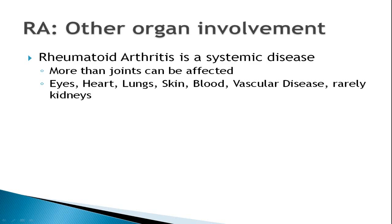An important thing to know about rheumatoid arthritis is that it is not just a disease of joints. It can affect more than just joints, and it really depends on the severity of the disease and how well or how poorly it is treated or controlled, which allows other manifestations to develop. It can affect virtually anything from head to toe, including the eyes, heart, lungs, skin, blood vessels, and rarely the kidneys as well.